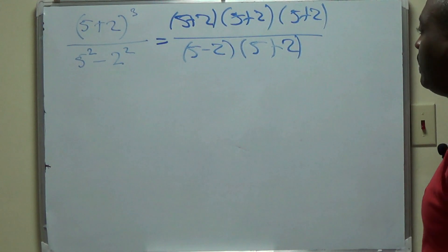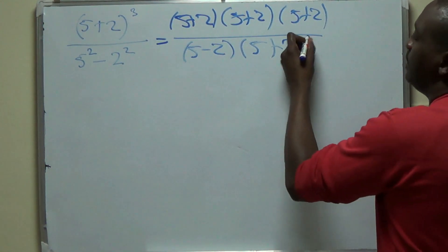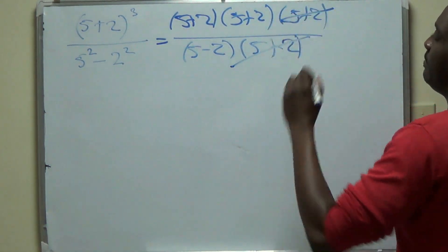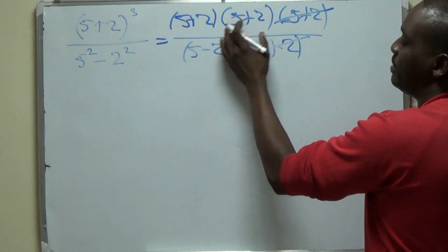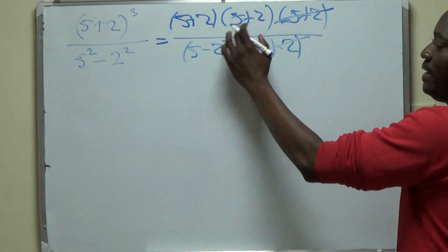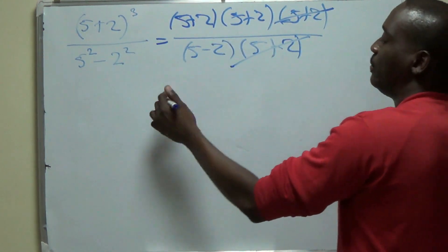And once we do that, we could now cancel. This 5 plus 2 will cancel with this 5 plus 2. So we now have 5 plus 2 into 5 plus 2 or 5 plus 2 squared over 5 minus 2.